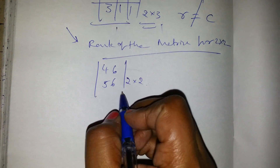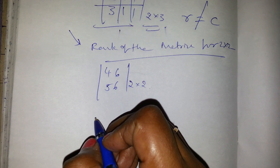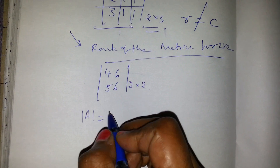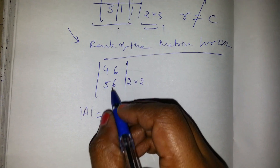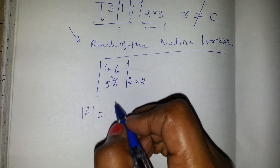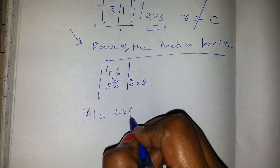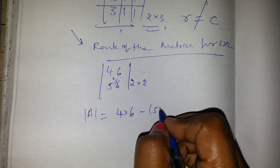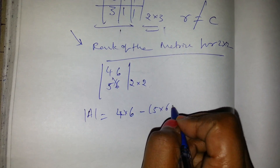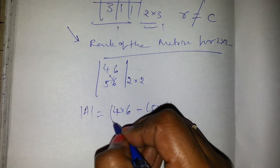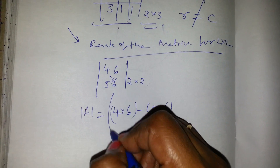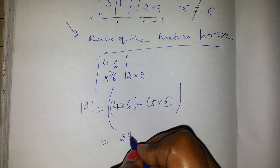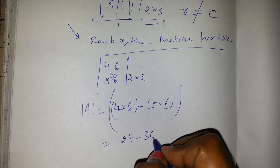First we have to find out the determinant of the matrix. The determinant is found by cross multiplication: 4 into 6 minus 5 into 6. That gives us 24 minus 30.